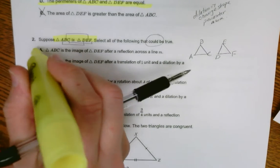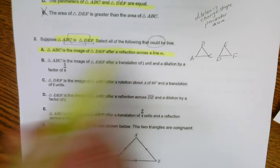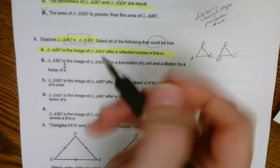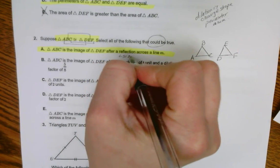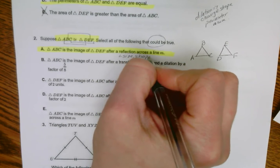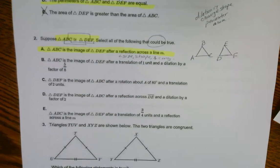Well, that could be true because, again, as I talked about in a previous video, reflection maintains size, shape, and angle are all congruent. So that could be true.